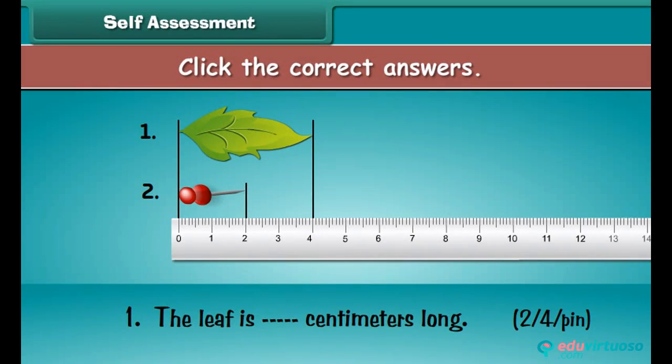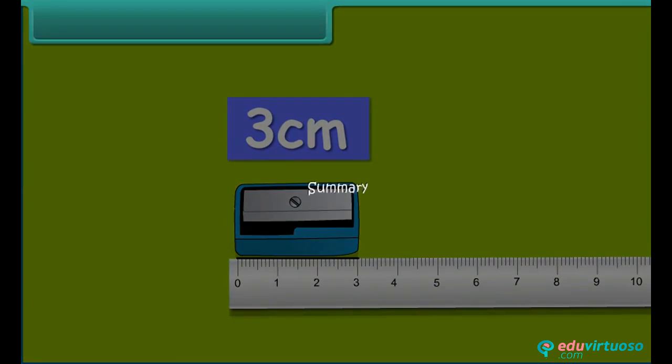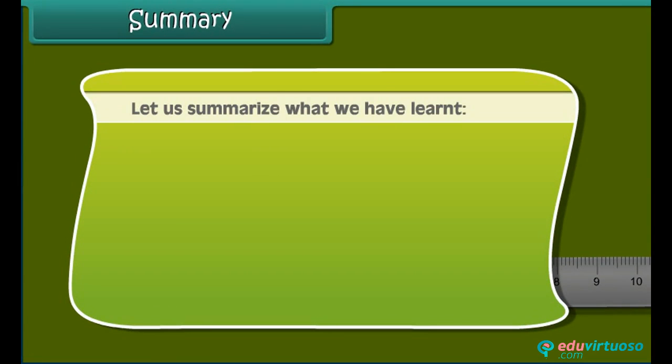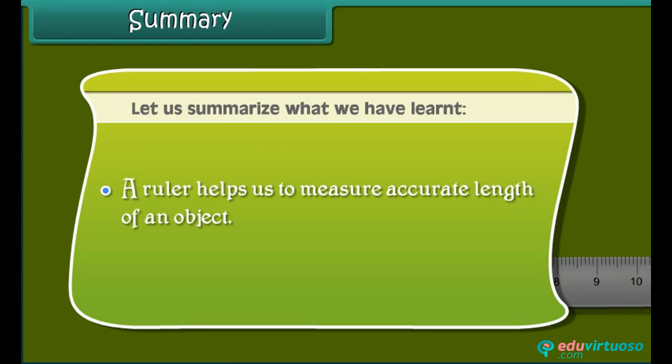Observe the image carefully and click the correct answers. Summary. Let us summarize what we have learned. A ruler helps us to measure accurate length of an object.